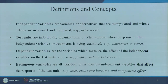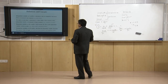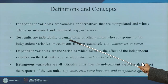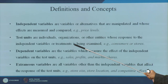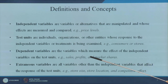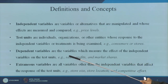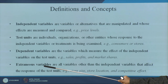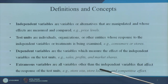Let us look at some definitions used in causal research designs. Independent variables are those that are manipulated — x1, x2, x3. Test units are individual organizations whose response to the independent variables or treatments are being examined — for example, consumers or the store on which you are conducting the research. Dependent variable is what we are intending to measure.